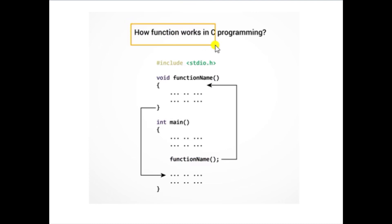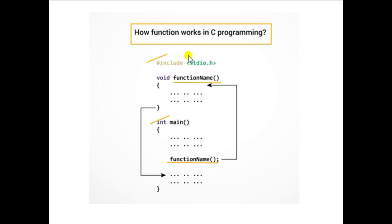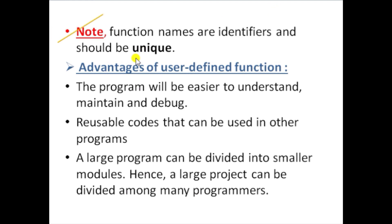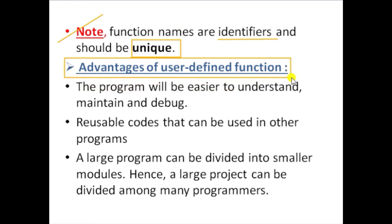To summarize how a function works: we declare the function body and inside the main function, whenever we need to perform an operation, we call the function by its name. It jumps to the function, executes all the statements, and gives the result. One notable thing is that function names are identifiers and should be unique — they must match when you declare and when you call the function.